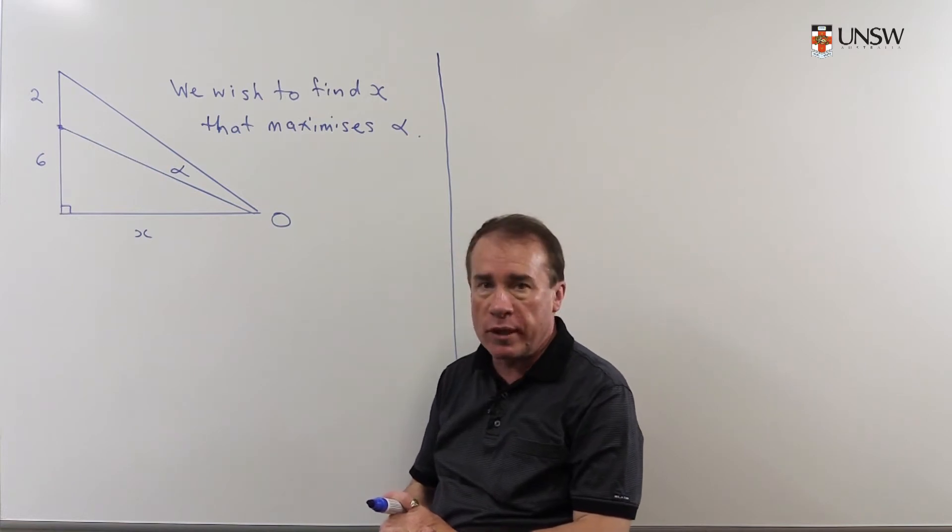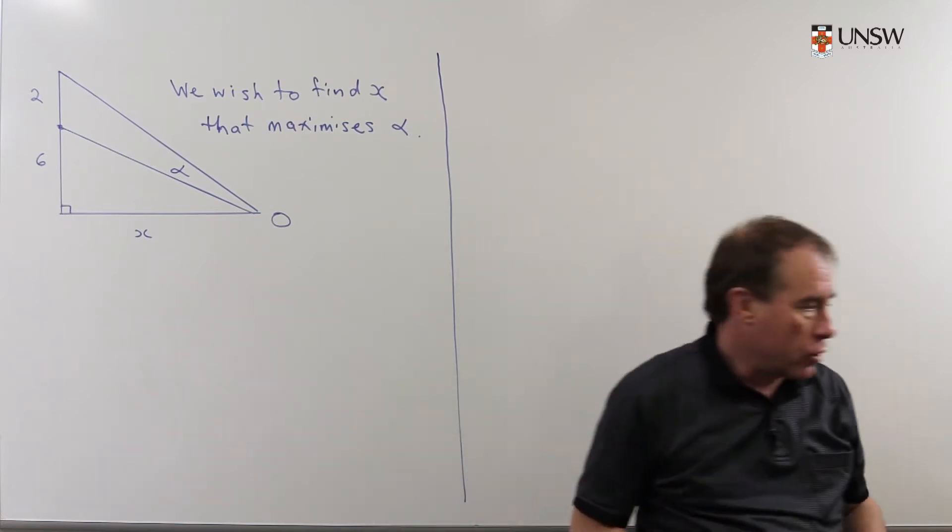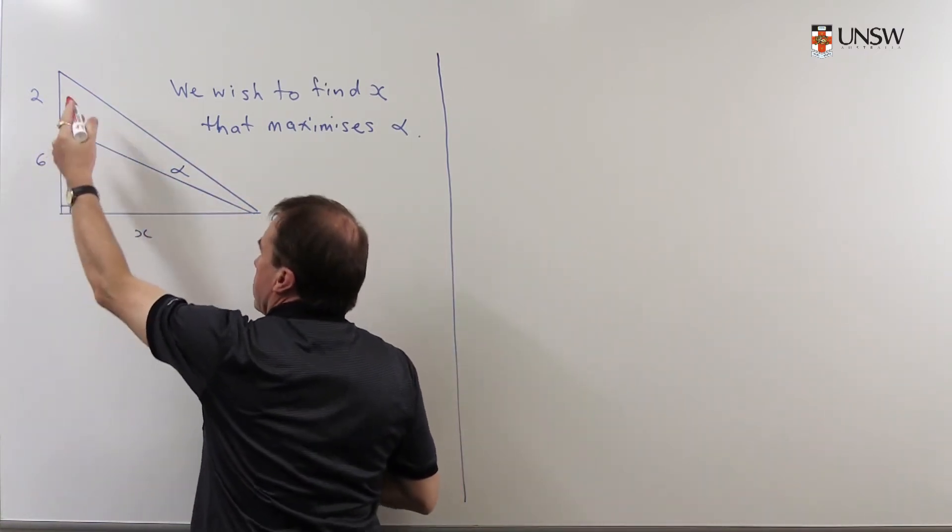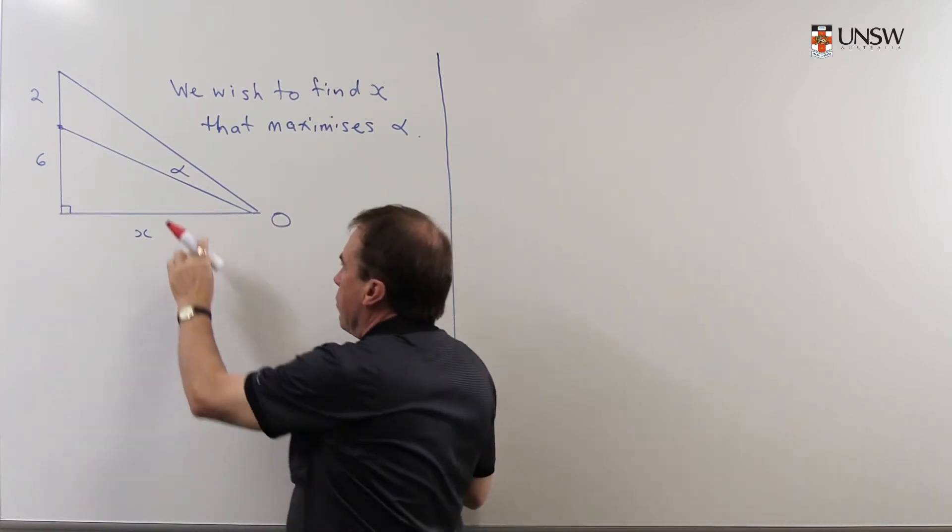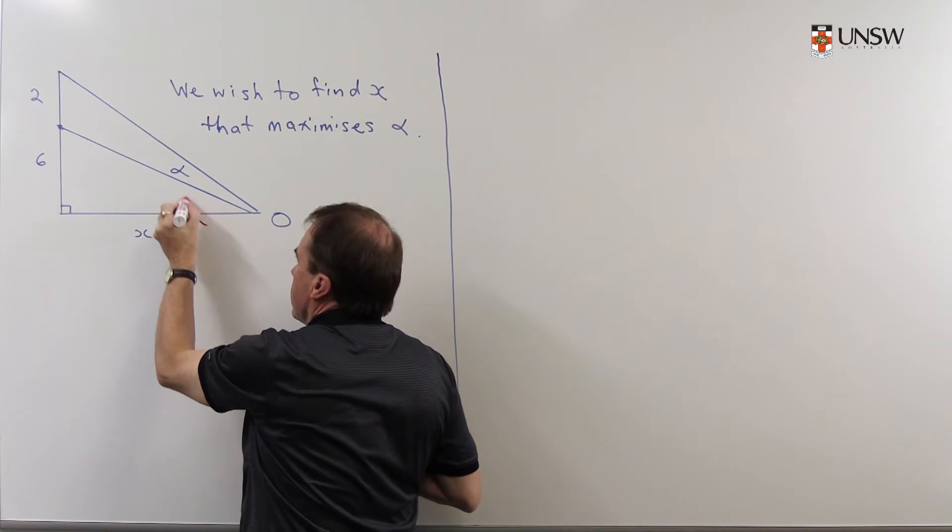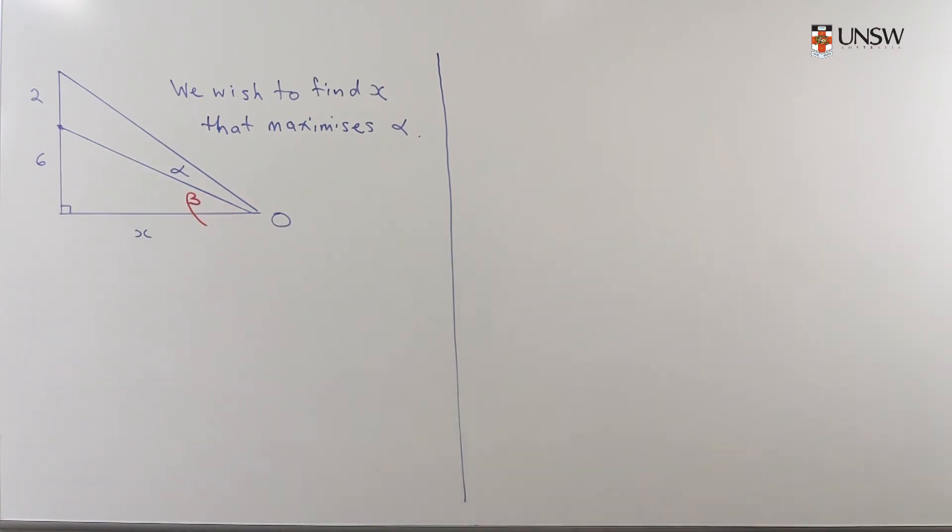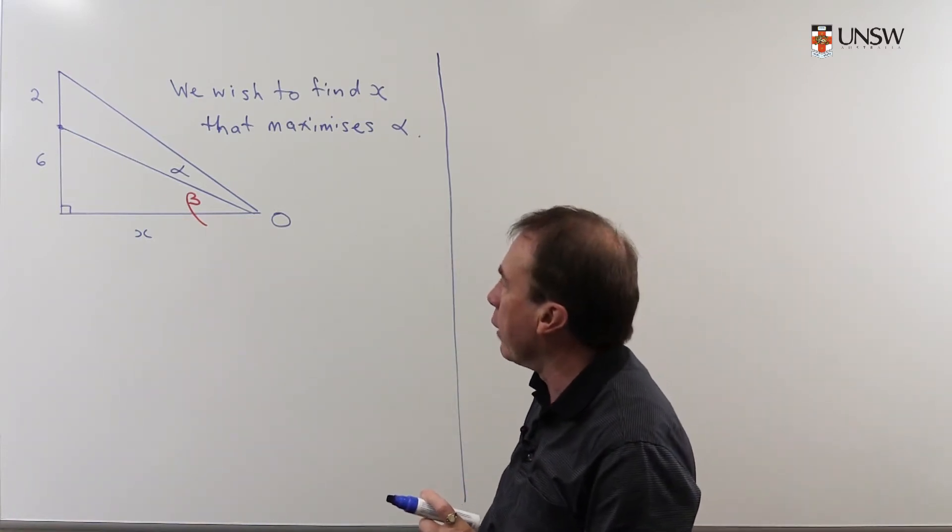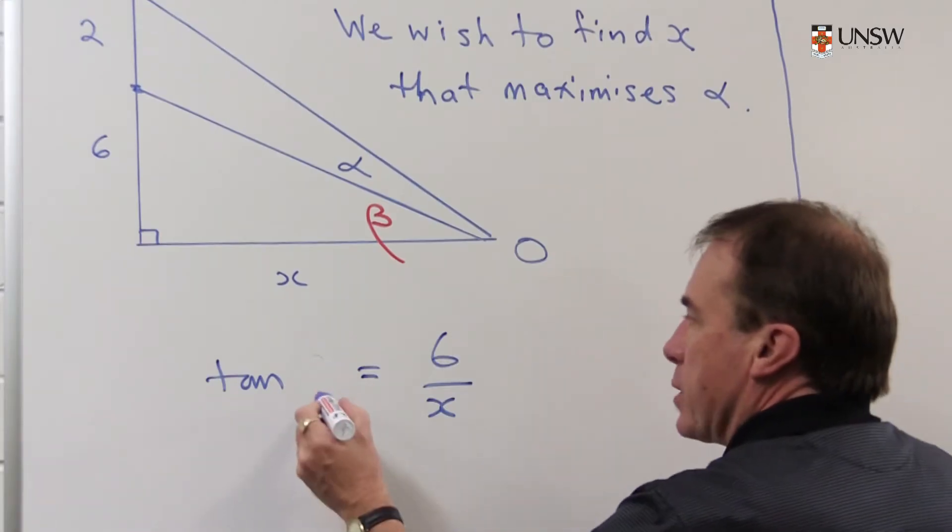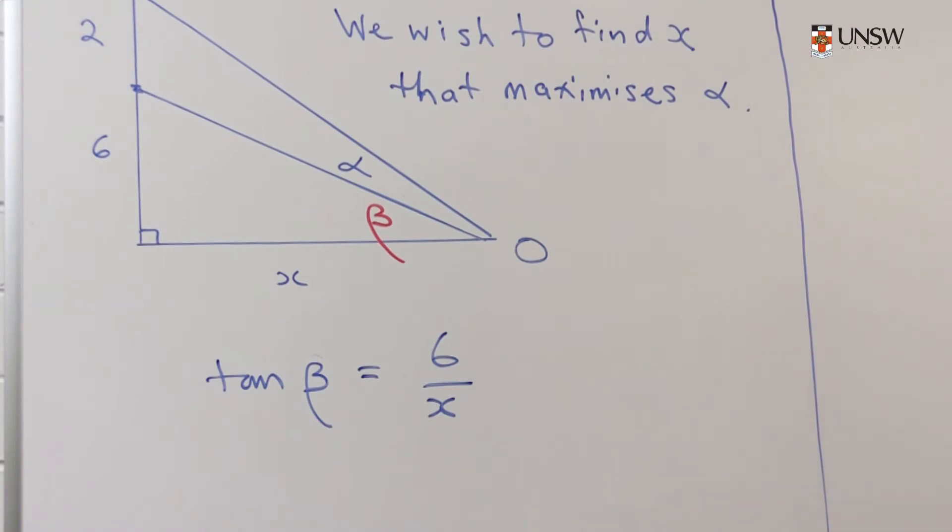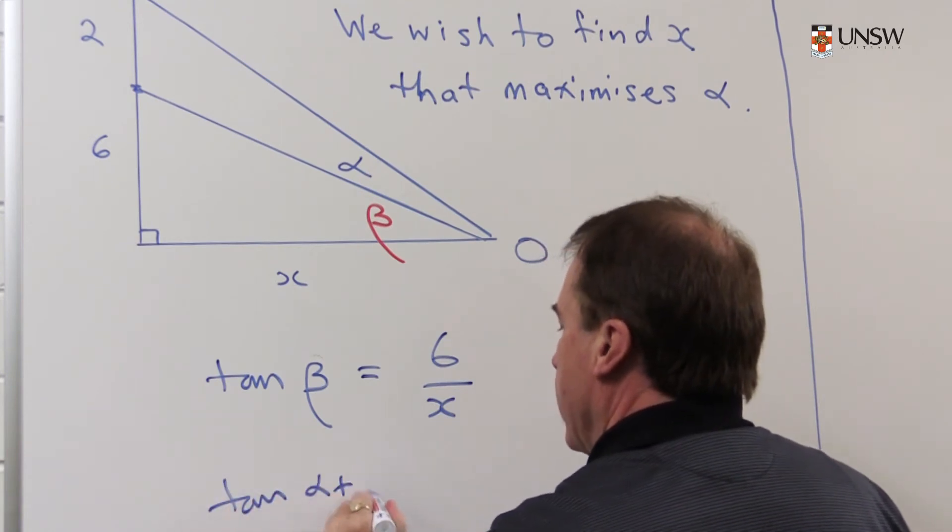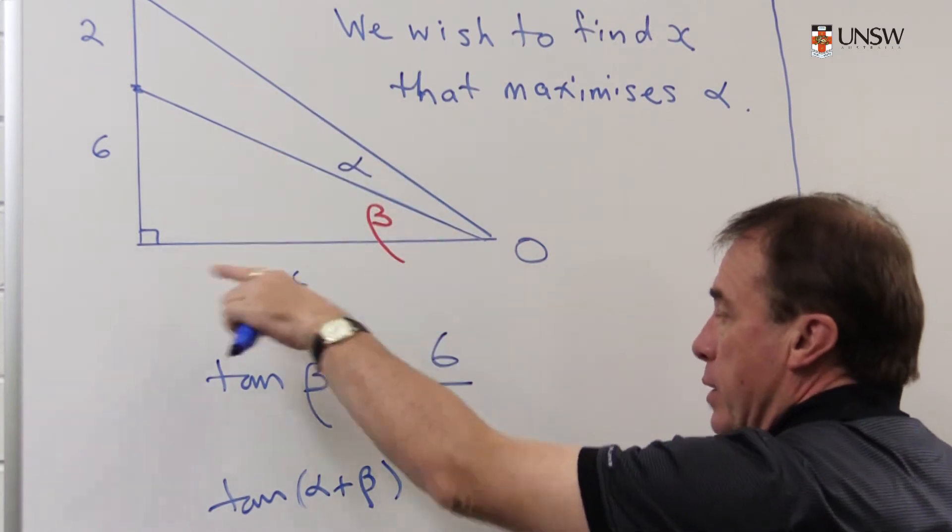Now there are many ways of solving this problem. I'm just going to show you one particular method. I'm going to introduce another angle down here. Because I've got right angle triangles in the picture, I'd like to make use of that, so I'm going to call this angle here beta. That will enable me to make use of right angle trigonometry. So firstly I'm going to brainstorm the triangle and see what we can write down. We can say that tan(beta) = 6/X, and in the big triangle I can say that tan(alpha + beta) = 8/X.